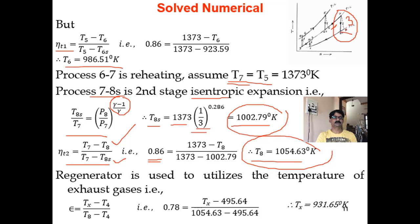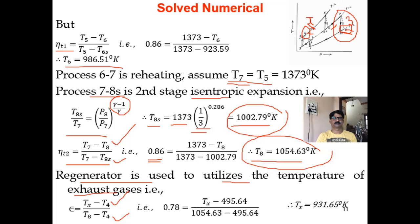A regenerator is used to utilize the heat of exhaust gases. Gas exits at point 8 at a much higher temperature than T4. Regenerator effectiveness = actual heating / ideal heating = (Tx - T4) / (T8 - T4) = 0.78. Solving for Tx, the temperature after regeneration, gives Tx = 931.65 K.